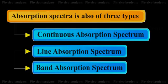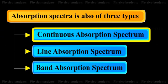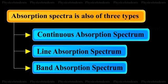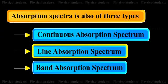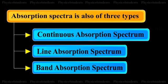Absorption spectra are of three types: Continuous Absorption Spectrum, Line Absorption Spectrum, and Band Absorption Spectrum.